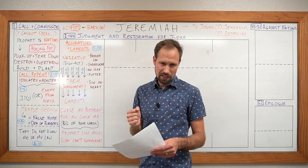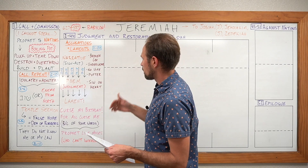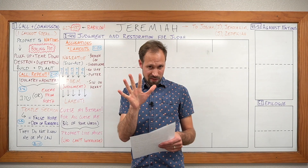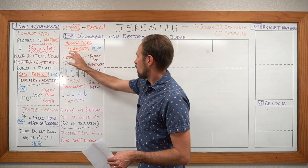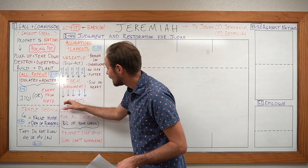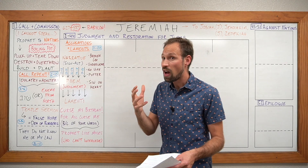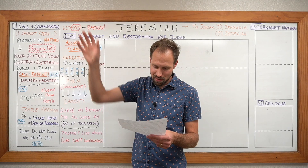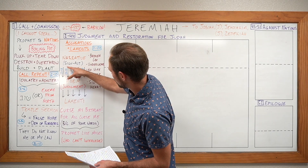The next section, Jeremiah 11 to 20, is a little bit complicated. But we can wrap our minds around these chapters by tracing the shifts in genre. Five times in these chapters, it's going to shift from narrative to poetry — usually a judgment oracle — to a lament. A lament is a personal cry out from Jeremiah the prophet himself, not to the people, but to God. This is a very unique element in the book of Jeremiah.